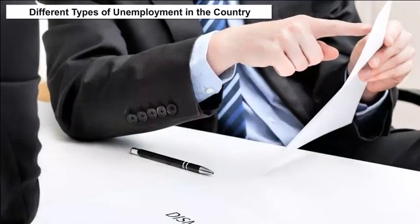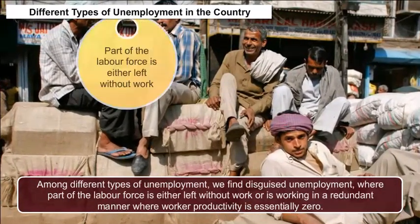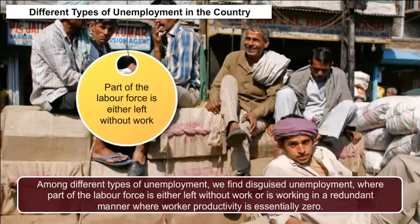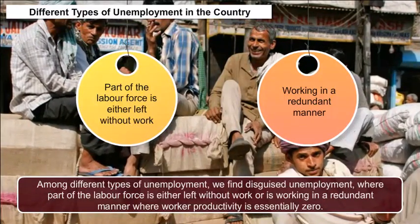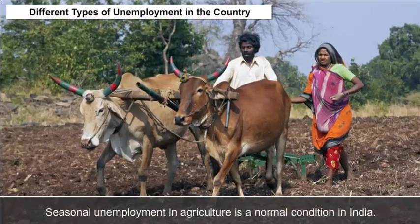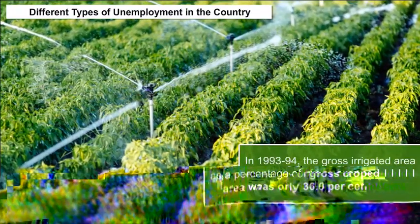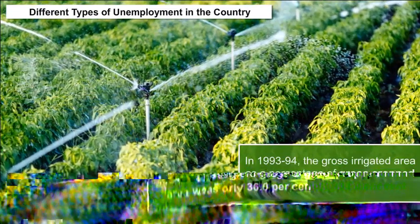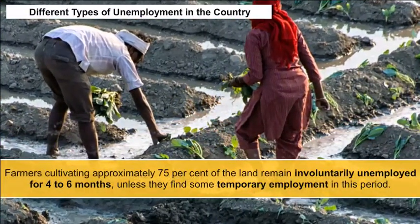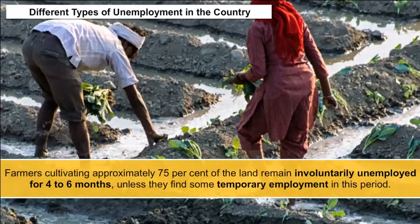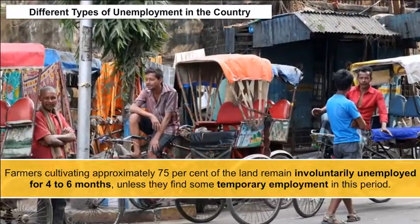Among different types of unemployment, disguised unemployment is where part of the labor force is either left without work or is working in a redundant manner where worker productivity is essentially zero. Seasonal unemployment in agriculture is also a normal condition in India. In 1993-94, the gross irrigated area as a percentage of gross cropped area was only 36%, implying that farmers cultivating approximately 75% of the land remain involuntarily unemployed for four to six months unless they find some temporary employment.